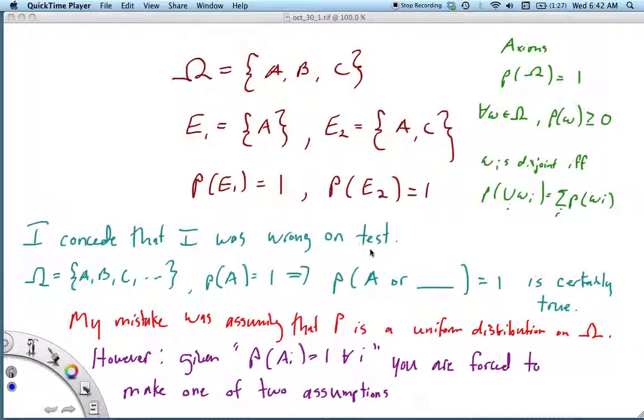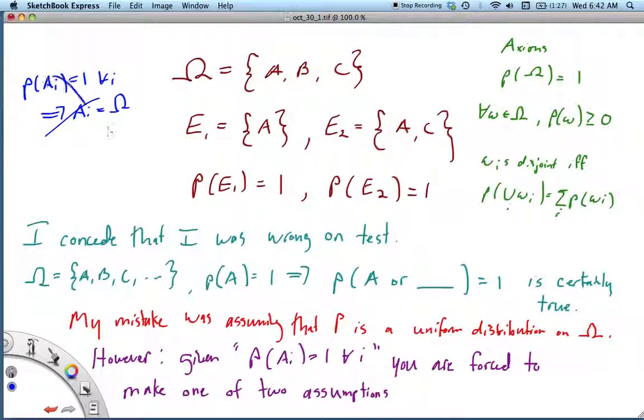I was definitely wrong when I wrote that the condition P(Ai) = 1 for all i implies that Ai is the same as Ω. Obviously that's not true.